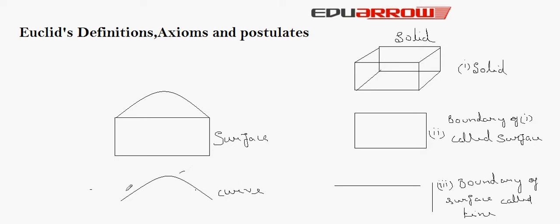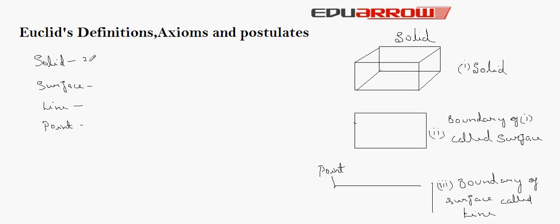These lines end in points. In each step, we lose one extension, also called a dimension. Therefore, a solid has three dimensions, a surface has two dimensions, a line has one dimension, and a point has no dimension.